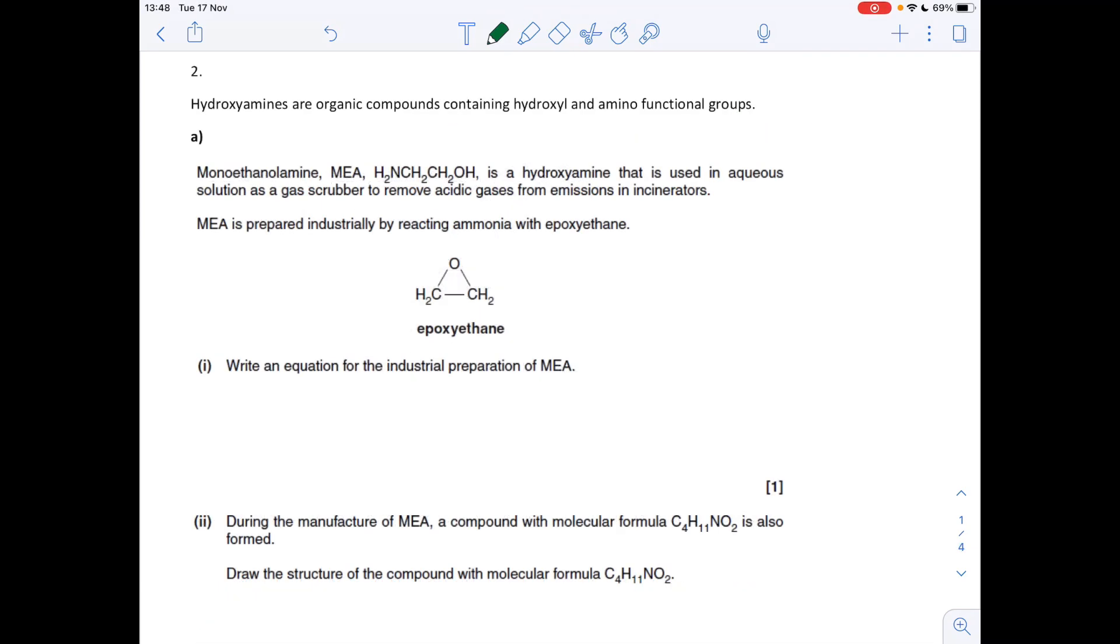Question 2, first bit's okay, second bit's not very nice at all, so I'll take my time explaining that bit. So the first thing I've got to write an equation for the industrial preparation of MEA, and we're told that it's made by reacting ammonia with epoxy ethane. We're given the structure for epoxy ethane, so I'll just draw that up now.